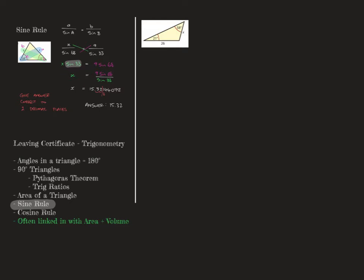We're going to use the sine rule. You can see from the last question — it's in your log tables and it's an easy one to learn: the side A over sine of A is equal to B over sine of B. It's always good to sketch the triangle, so let me sketch that now. So we have 21, 58, X, and 26.